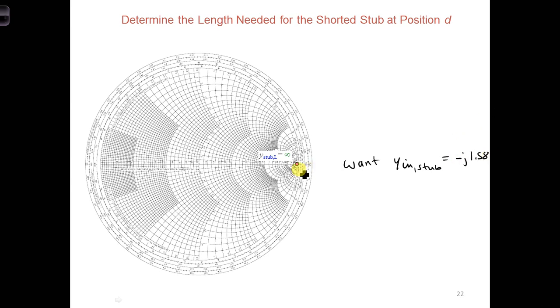Now, this is a new load for us, and so we're moving towards the generator, rotating the same direction as before. As we move away from the shorted end of the stub, the load admittance dot rotates in the clockwise direction along a constant radius from the center. So is there any point on the Smith chart where we can stop and say this length of the stub would work to achieve this value?